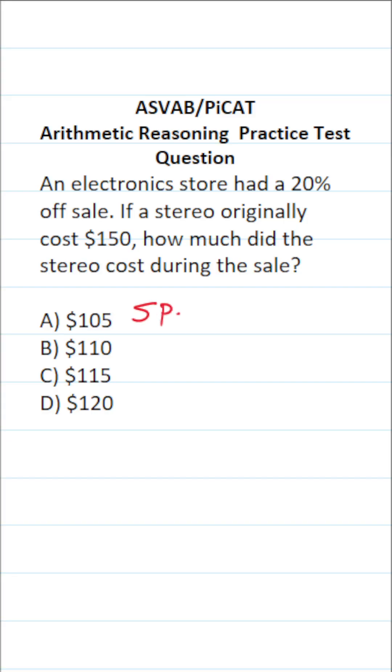So we're going to be calculating the sale price of the stereo. That's going to be equal to the original price of the stereo minus the original price times the discount amount. What is the original price of the stereo? It's $150. So this becomes $150 minus $150 times.